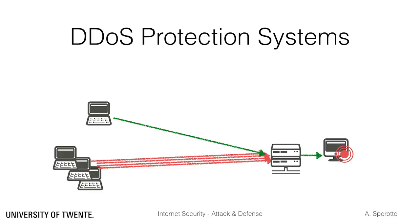One way of achieving this is to place dedicated hardware inline, close to the edge of the target network. This type of dedicated appliance has the goal of cleaning traffic from DDoS traffic. However, an inline device can be ineffective in case of volumetric attacks, in which the access line is saturated. In this case, the attack is just successful anyway, simply by exhausting network resources.